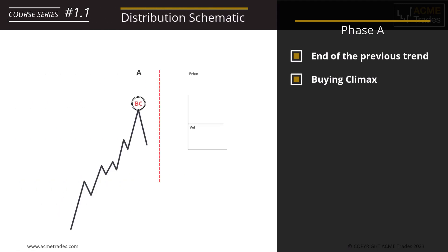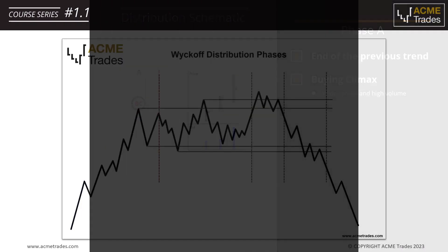Within Phase A, for example, we have BC — a buying climax — that leads to an automatic reaction.